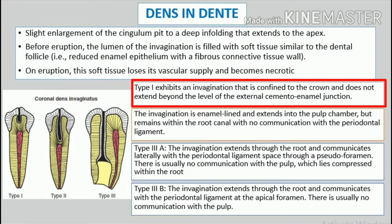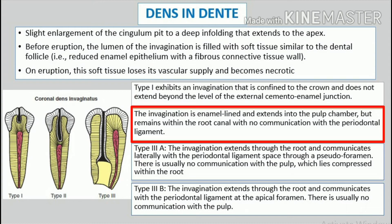Type 1 exhibits an invagination that is confined to the crown and does not extend beyond the level of the external cementoenamel junction. Type 2: the invagination is enamel-lined and extends into the pulp chamber, but remains within the root canal with no communication with the periodontal ligament.